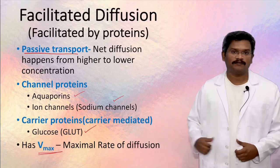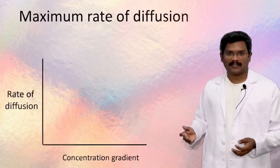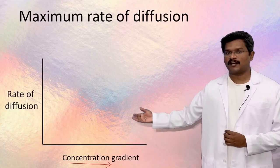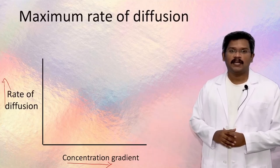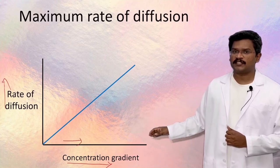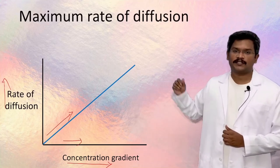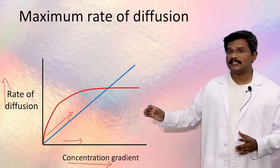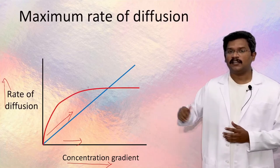Another difference between simple diffusion and facilitated diffusion is the presence of a maximum rate of transport called Vmax. Let us discuss this with the help of a graph. The x-axis is the concentration gradient and the y-axis is the rate of diffusion. In simple diffusion, if the concentration gradient increases, the rate of transport also increases.